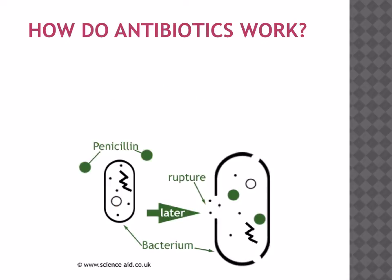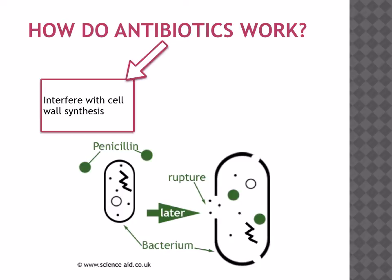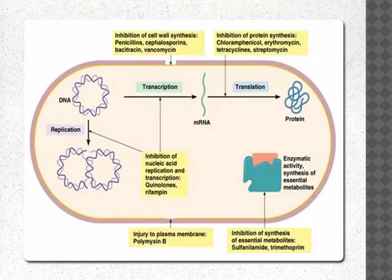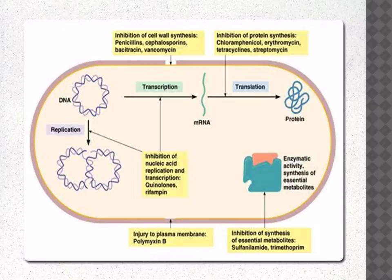Antibiotics can either work by interfering with cell wall synthesis or by making pores in the membrane. Here's a diagram to show how different antibiotics work. Some antibiotics, such as penicillin, inhibit cell wall synthesis. Others inhibit protein synthesis. Some antibiotics also inhibit nucleic acid replication. They can damage the plasma membrane, or inhibit the synthesis of essential metabolites.